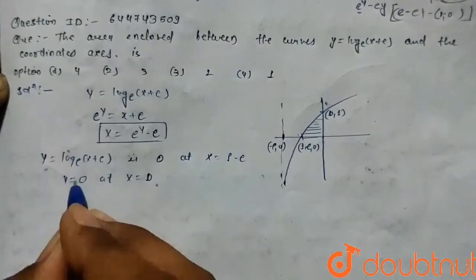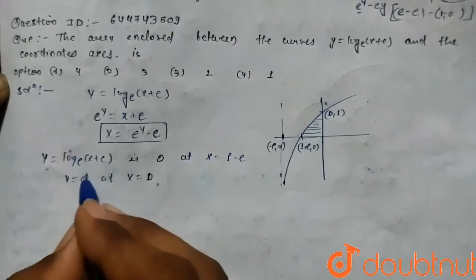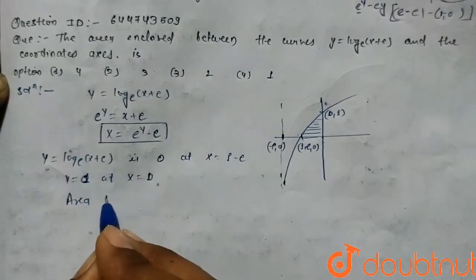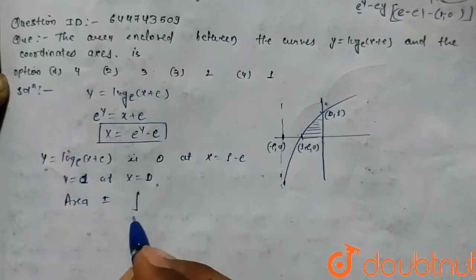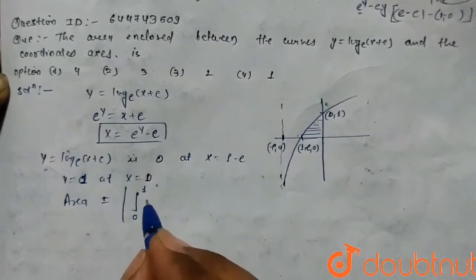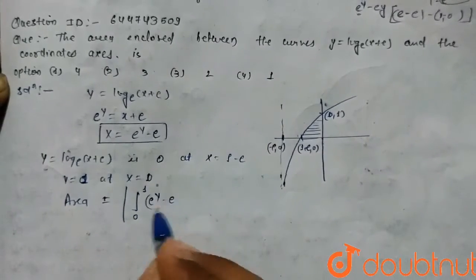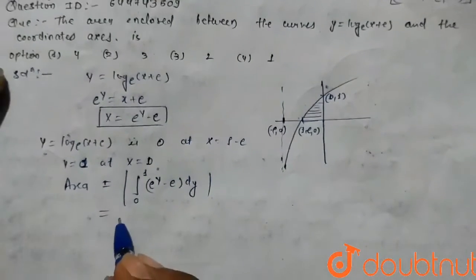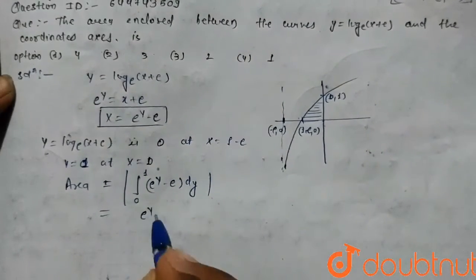|e^y - e| dy. So the integration equals [e^y - ey]